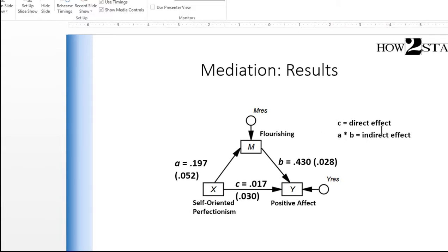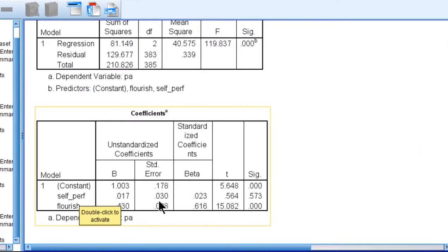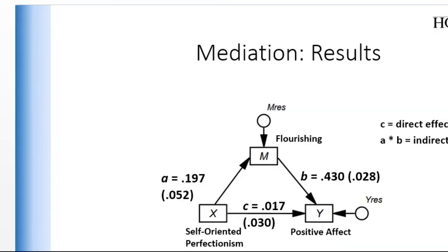Now I have all terms required to estimate and test the indirect effect for statistical significance. Notably, self-oriented perfectionism has an unstandardized beta weight of 0.017, which is not statistically significant (p = 0.573). Therefore there is no statistically significant direct effect between self-oriented perfectionism and positive affect. I'm presuming the indirect effect through flourishing will be statistically significant, but I have to test that first.